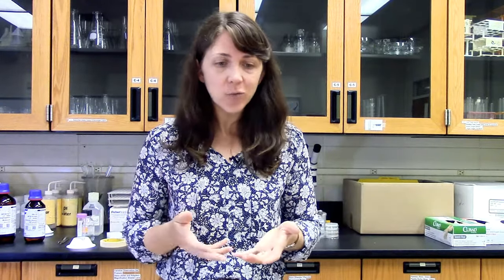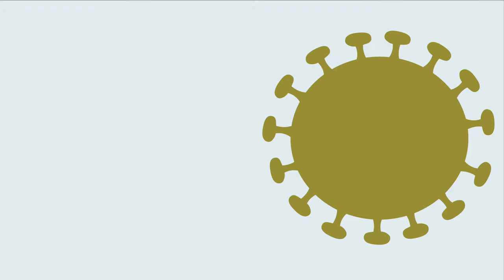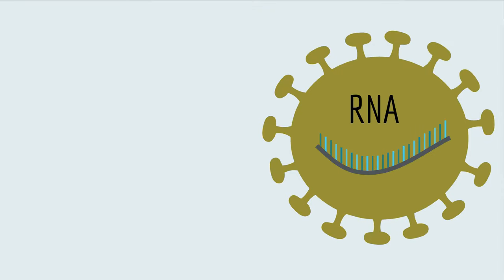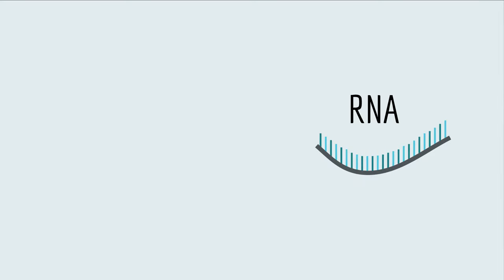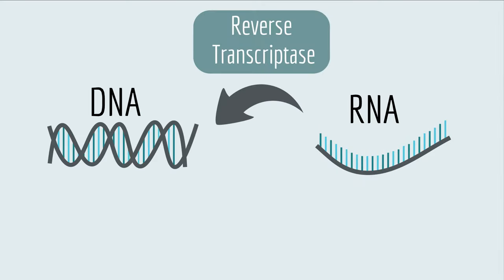Well, what if the thing you're trying to copy is RNA and not DNA? Like, what if you want to know whether someone is infected with the COVID-19 coronavirus? You can't do regular PCR to detect coronavirus DNA in a sample because the coronavirus doesn't have DNA — it stores its genetic information as RNA instead of DNA. So to do PCR using an RNA template, you first copy the RNA into DNA using an enzyme called reverse transcriptase.